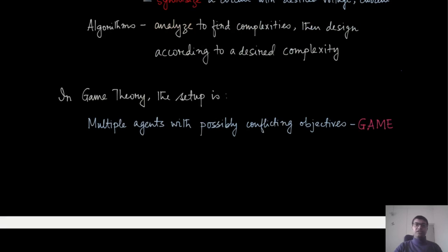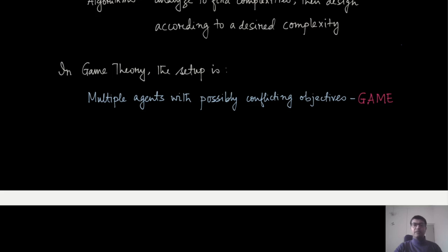In game theory, the formal setup is we have multiple agents with possibly conflicting objectives, and this is what we are going to call as a game. This will become more clear when we discuss examples.